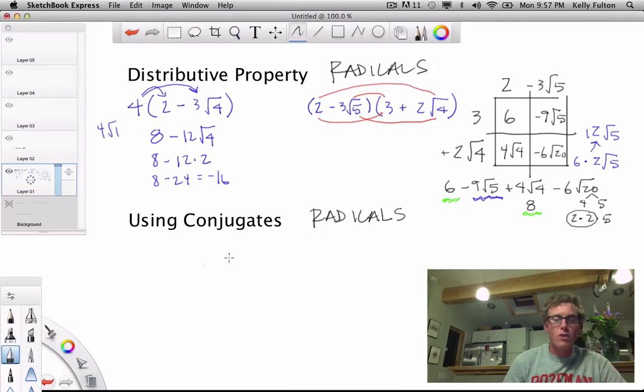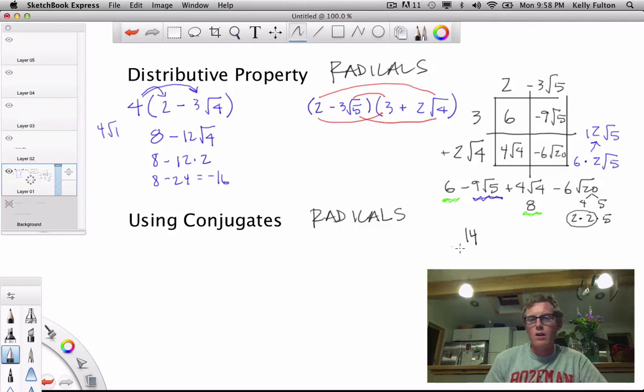We can add this one and this term together. Okay, so when we ultimately put everything together, well, we have 6 plus 8, 14. And then when I add the blue parts together, well, I'm going to get negative 9 root 5 plus 12 root 5. And so that's going to give me plus 3 root 5. And that's my final solution right there.